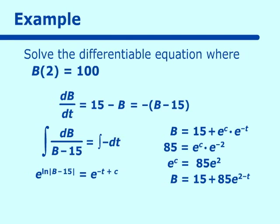You may wonder what happens when we remove the absolute value from |b - 15|. If b is greater than 15, we're fine. If b is less than 15, we get a negative answer. It usually works out as we work through these kinds of problems.